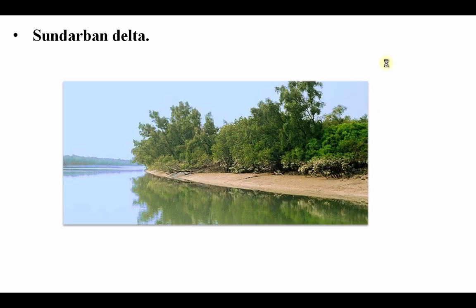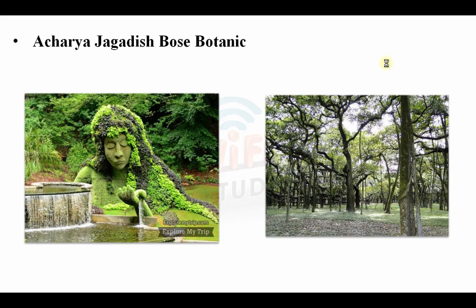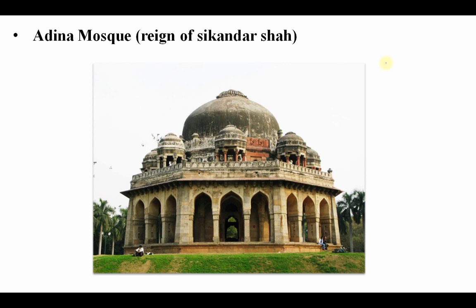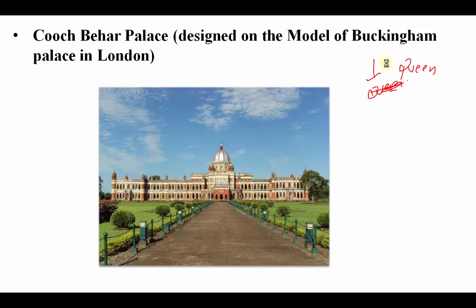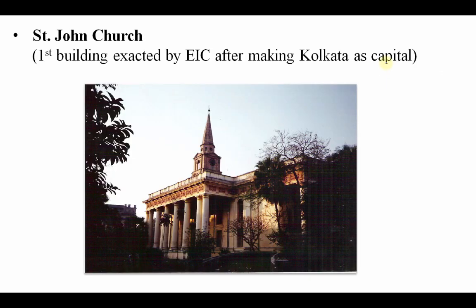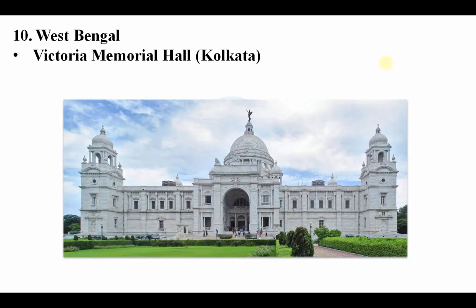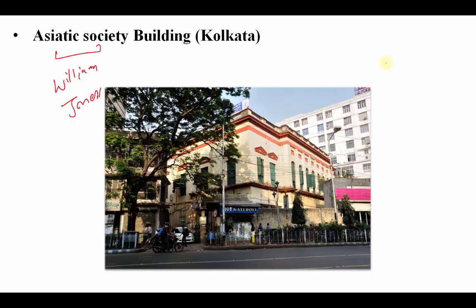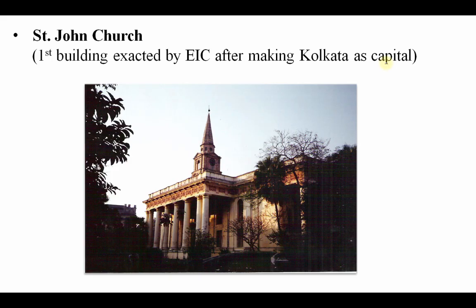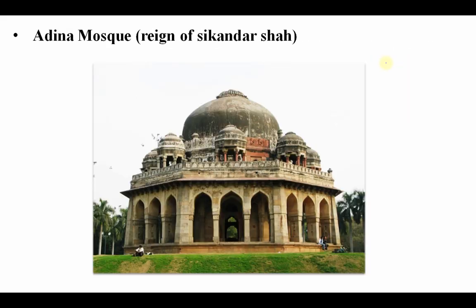To summarize West Bengal: Sundarban Delta, Acharya Jagdish Bose Botanical Garden, Adina Mosque, Kuch Bihar Palace, St. John Church, Asiatic Society Building, and Victoria Memorial Hall — all these places are important for exams.